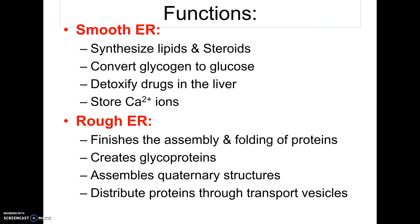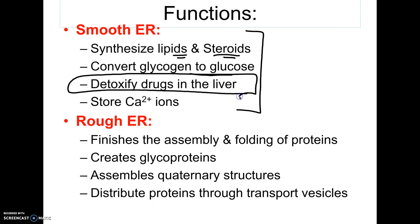Their jobs are very different. The smooth ER focuses on lipids — it's where lipids are manufactured, including triglycerides and steroids like aldosterone, testosterone, and estrogen. It also converts glycogen to glucose in the liver — remember from biochemistry, glycogen was how we stored energy between meals. Another very important function is detoxification: it's the detoxification site for drugs. Anything you eat gets absorbed in the small intestine and the first stop is the liver, where the smooth ER starts breaking down chemicals.